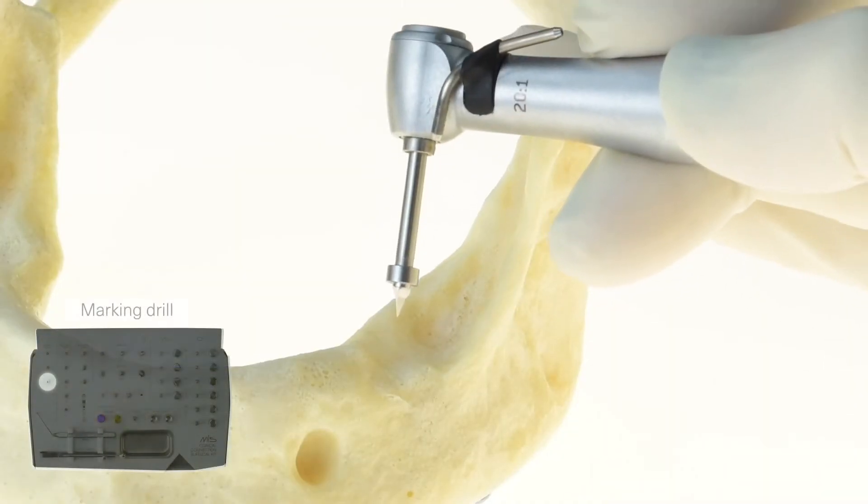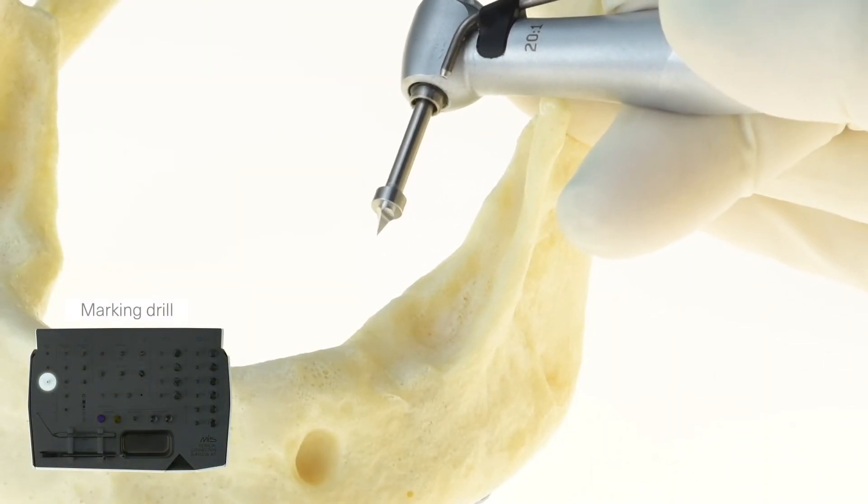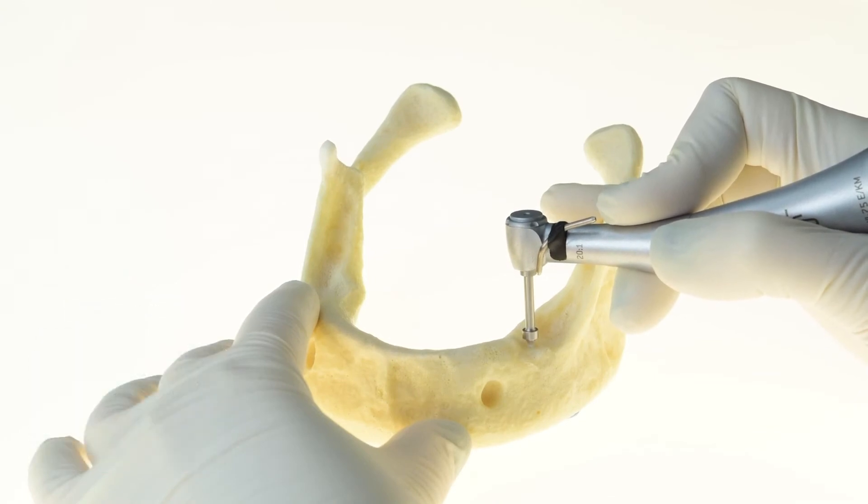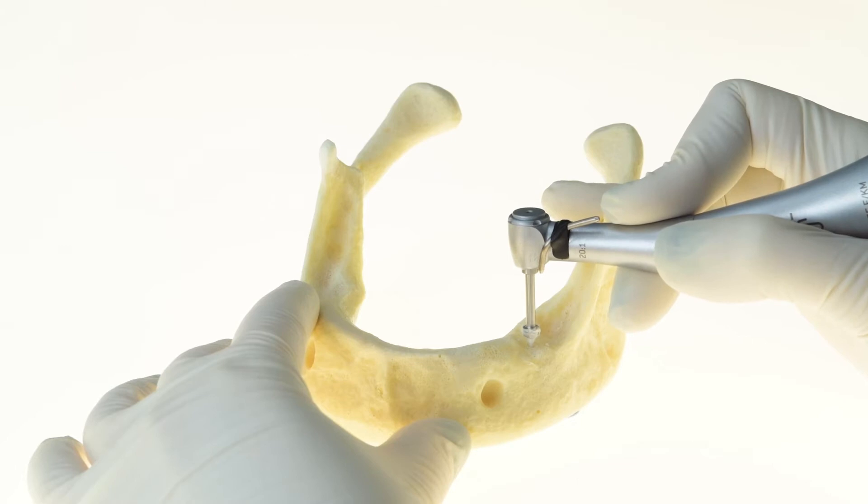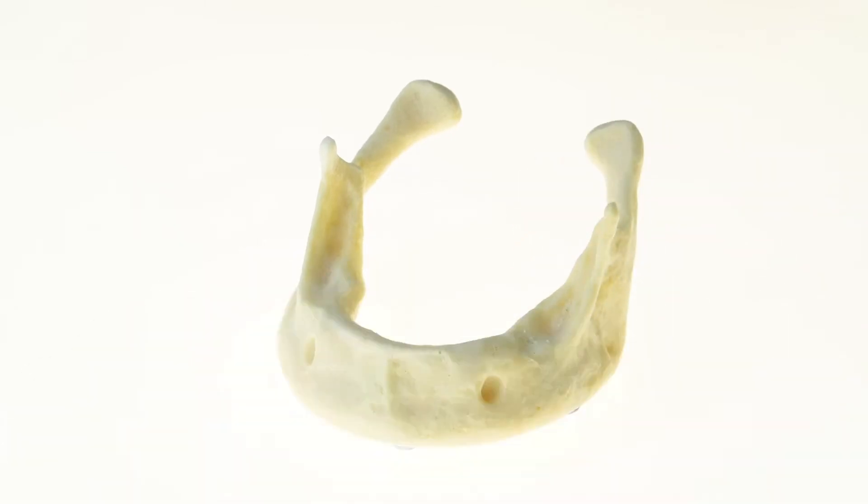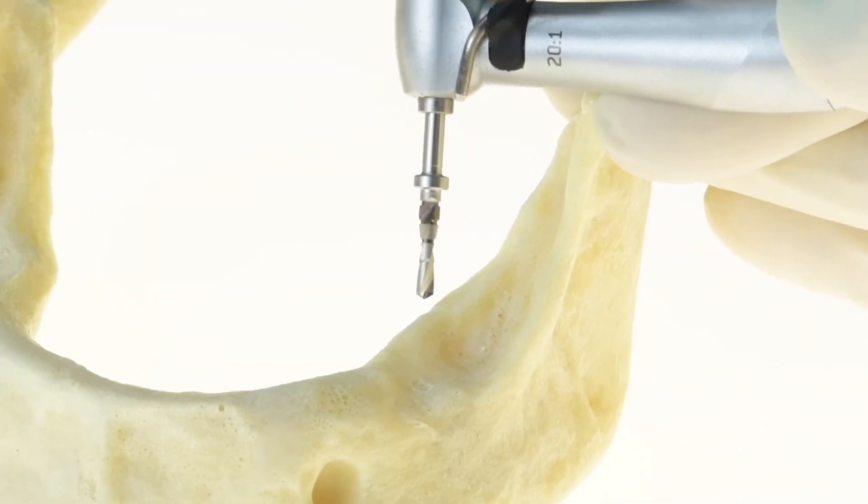The marking drill is used to start off the drilling sequence in an accurate manner. Its ring has a 4 mm diameter indicating the final implant position. After marking the correct drilling spot, we continue with the pilot drill.